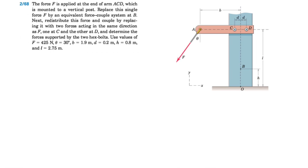Welcome back. In today's video we're going to be solving question 68 from the second chapter of the Meriam textbook. We have force F that is applied at the end of arm ACD, which is mounted to a vertical post. We need to replace this single force F by an equivalent force-couple system at B.